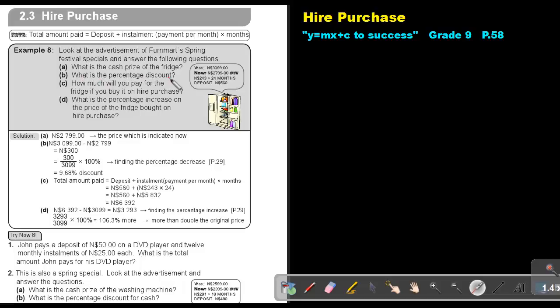What is the percentage discount? I take these two values and subtract them, which gives $300. Then I divide $300 by the original price of $3,099 and multiply by 100%, giving 9.68%.